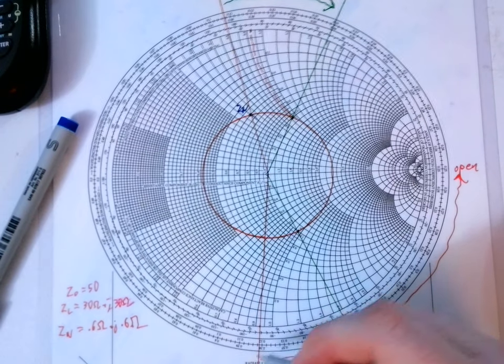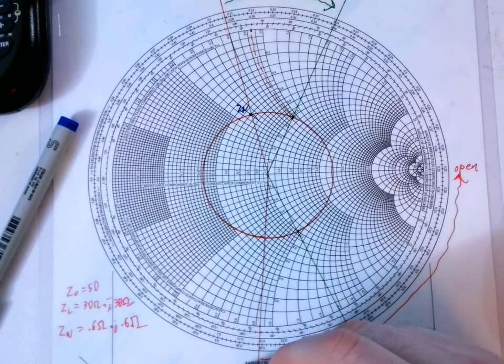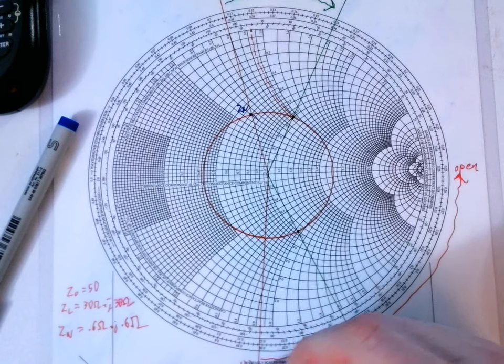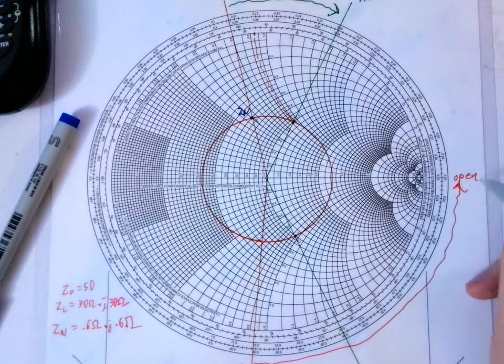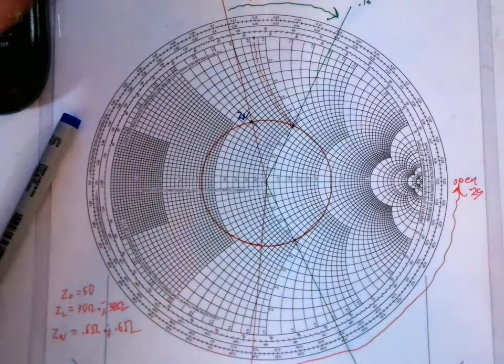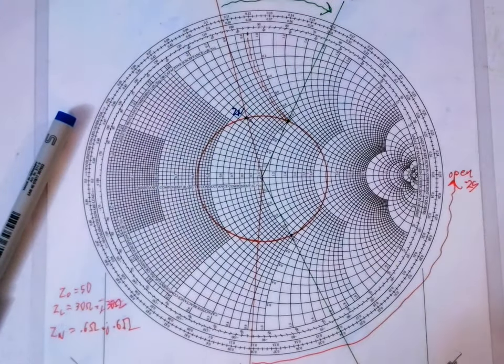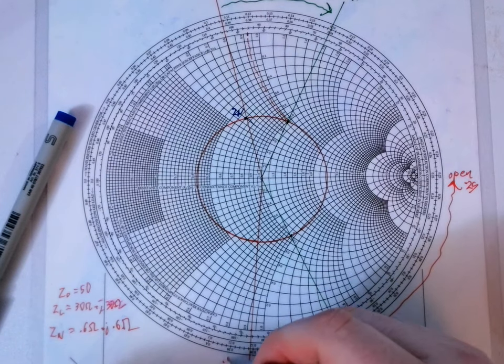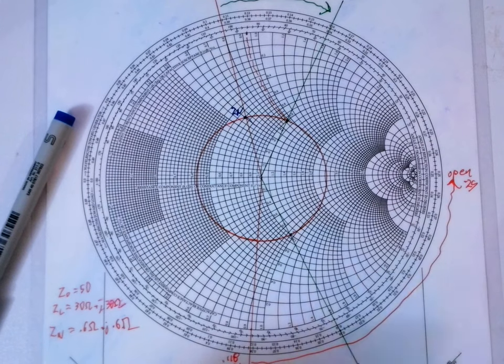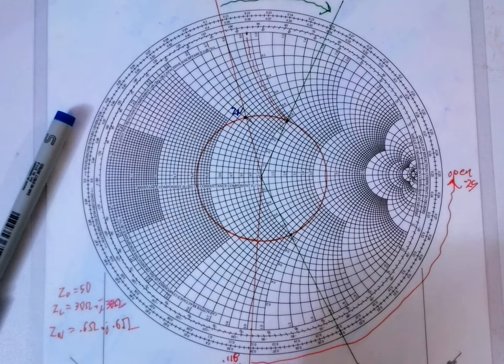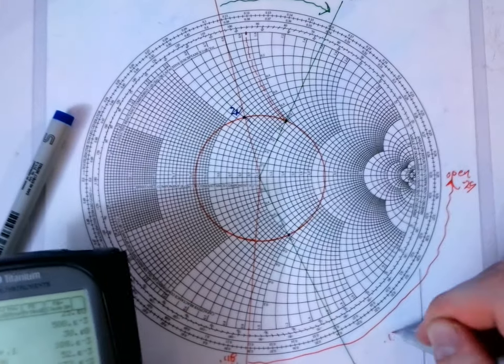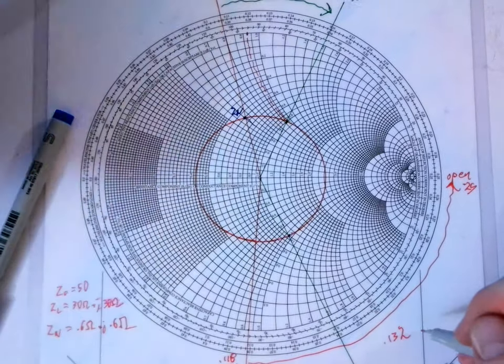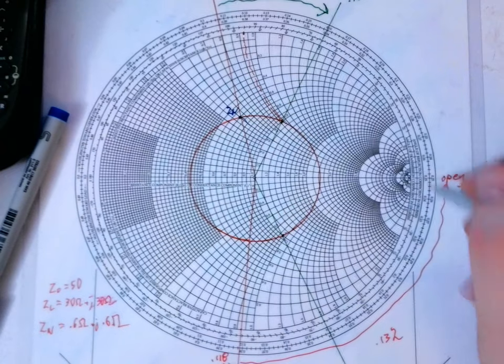So, if we want an open on our series, we need to go from this line to here in wavelengths. So, that would be .122 to .25. Oh, I'm sorry, that's not .112, that's .118. .118. Which gives me a wavelength of .132. So, that's subtracting this point from this point.